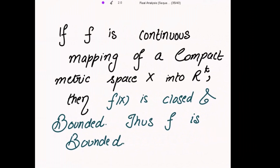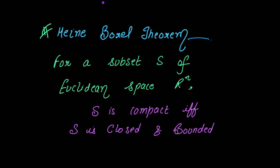This is an important theorem on compact metric spaces: if f is a continuous mapping of a compact metric space X into R^k, then f(X) is closed and bounded, and f itself is bounded. We will use the Heine-Borel theorem, which states that for a subset S of a Euclidean space R^n, S is compact if and only if S is closed and bounded.